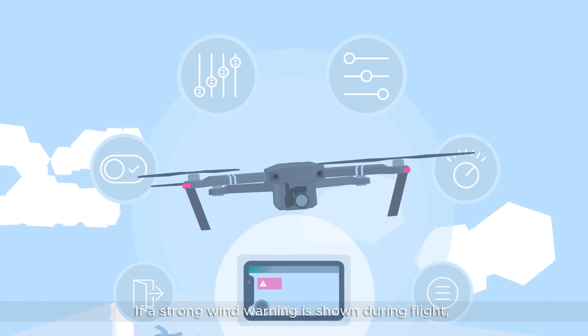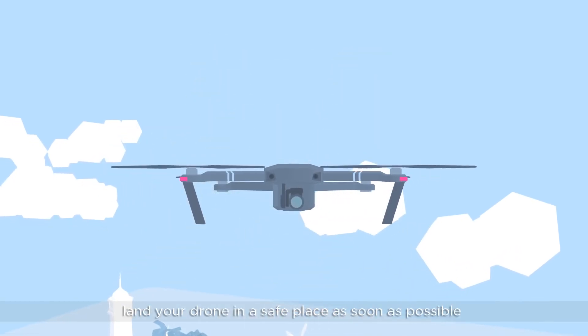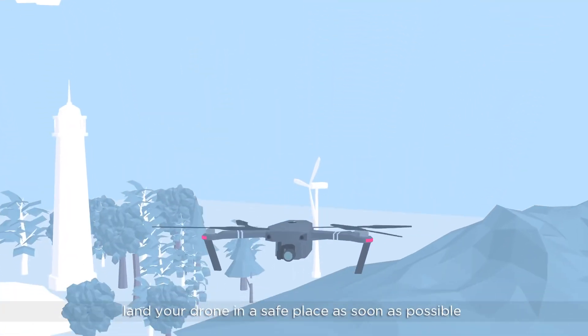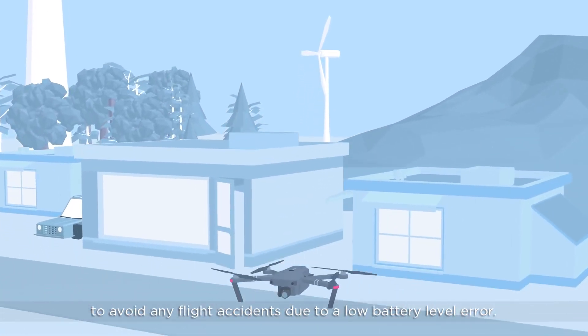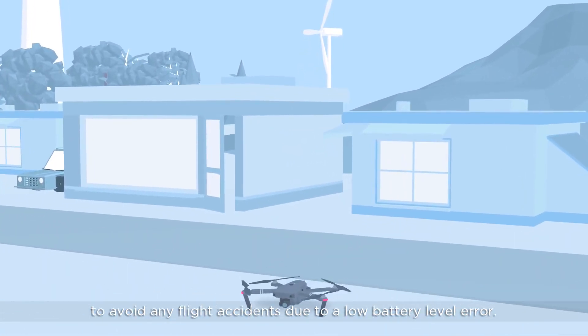If a strong wind warning is shown during flight, land your drone in a safe place as soon as possible to avoid any flight accidents due to a low battery level error.